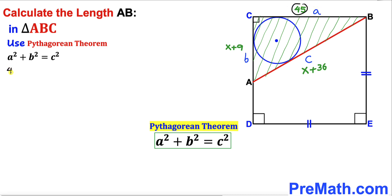Our a is 45, so 45² plus b in our case is (x + 9)² equals c in our case (x + 36)².